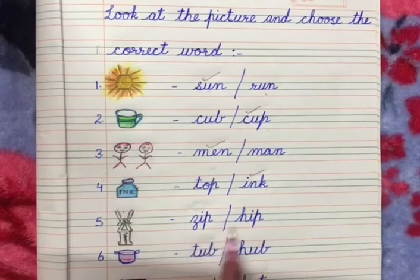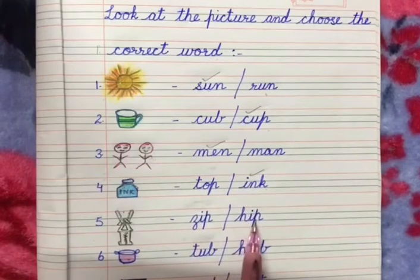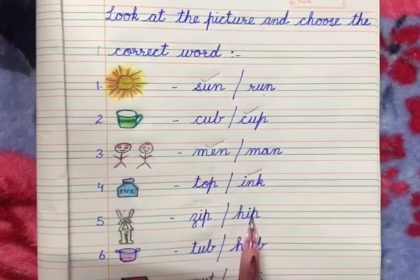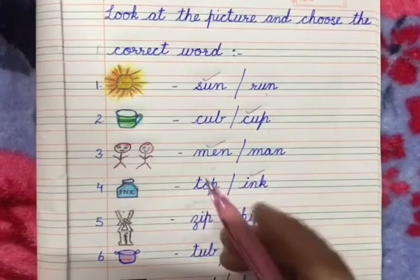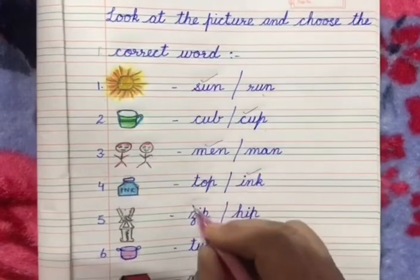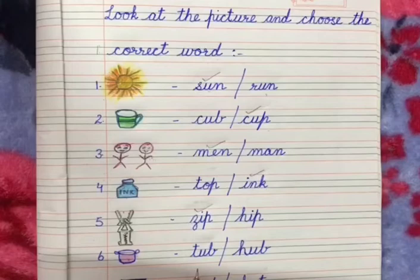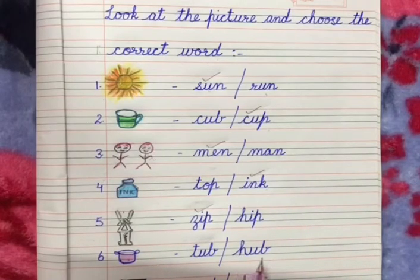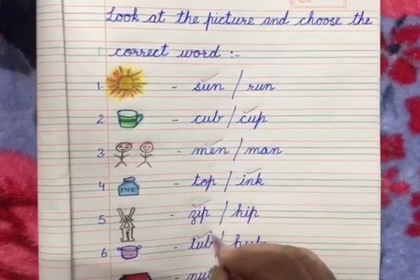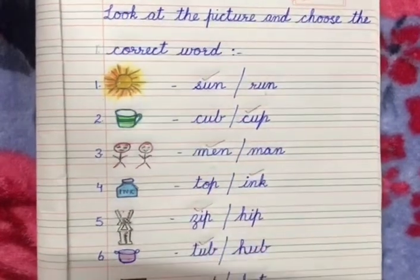Next is 'zip'. Look at the words: Z-I-P 'zip' and H-I-P 'hip'. So 'zip' is the correct word for the picture. Look at the next one: T-U-B 'tub' and H-U-B 'hub'. So 'tub' is the right word for the picture.